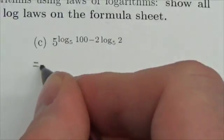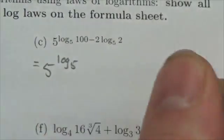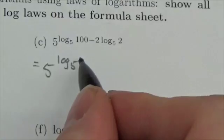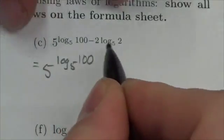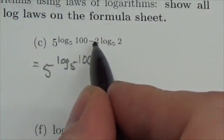So this is going to be 5 to the log base 5 of 100 because in order to combine these two logarithms together, the first thing I've got to do is get rid of that